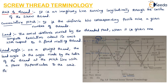The helix angle is the angle made by the helix of the thread at the pitch line with the axis of the thread. The angle made between the helix at the pitch line and the axis of the thread is called the helix angle. This angle is measured in an axial plane.